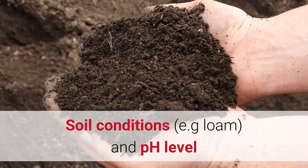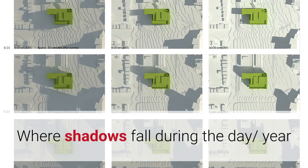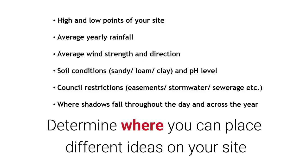Another area you want to look at is council restrictions, which are things like easements, stormwater drains, sewerage lines, access — things like that. Knowing this stuff is really important, because council restrictions will limit where you can build objects. The final bit of site analysis you want to know is where shadows fall during the day and throughout the year. This may seem tricky to figure out, but all you need is a rough estimate. You want to notice how it changes from season to season, and ensure that you don't put an area you want to use in summer in a shady spot, for example. Site analysis allows you to determine where you can place different ideas on your site.